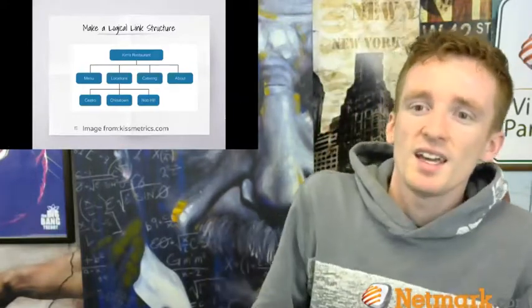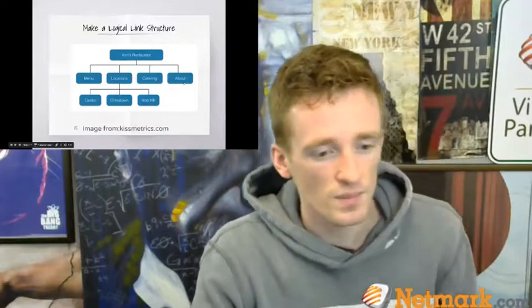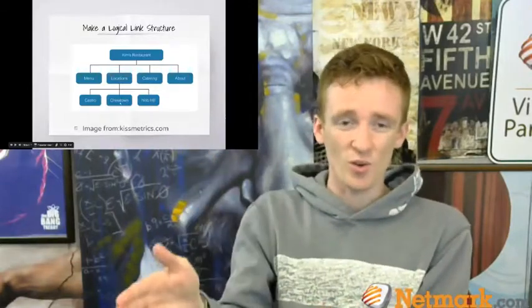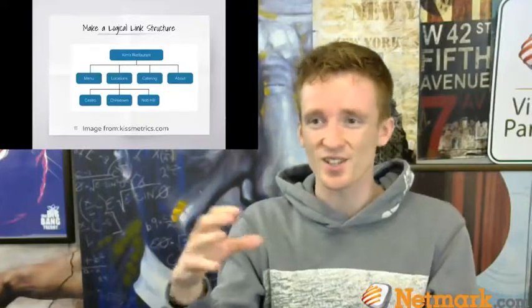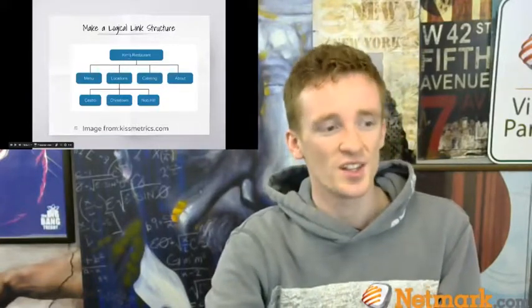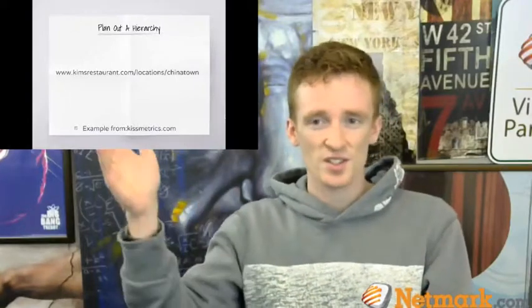Here's what it looks like in reality. If you were making kimsrestaurant.com, you'd have Kim's Restaurant at the top, then categories like Menus, Locations, Catering, and About. The next part is to make a logical link structure. So you have Kim's Restaurant, then Locations, then Chinatown — going in a specific order. You're building this for a robot to read. The URL would look like kimsrestaurant.com/locations/chinatown.